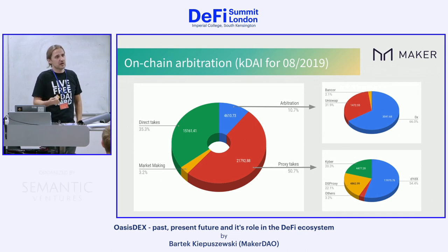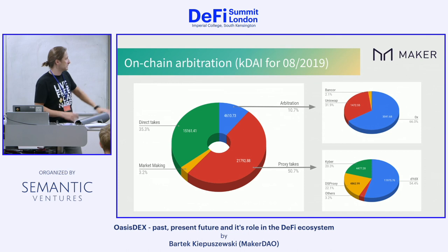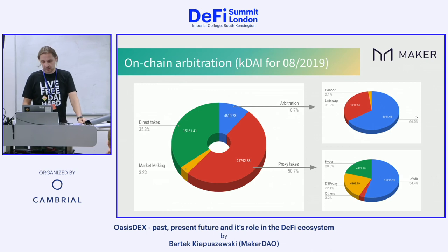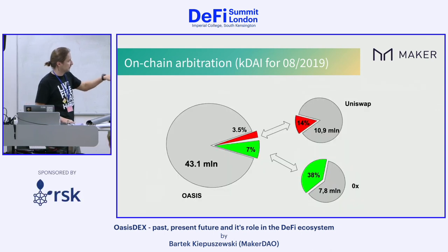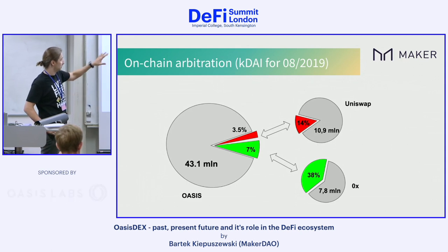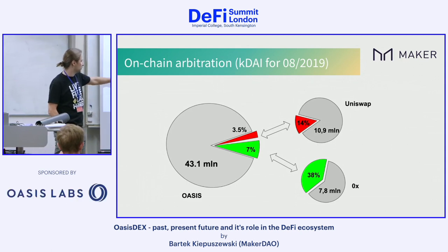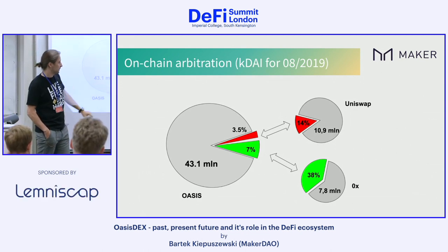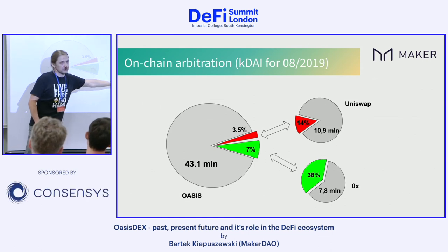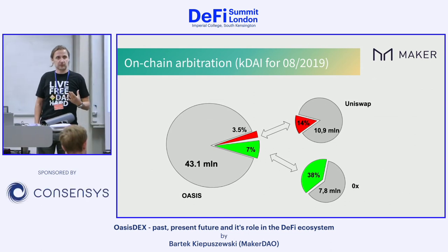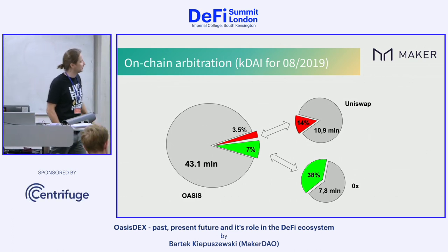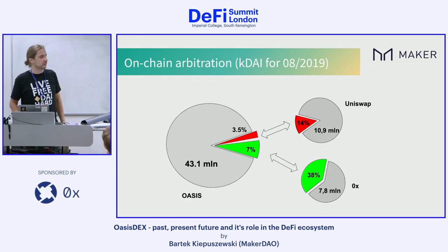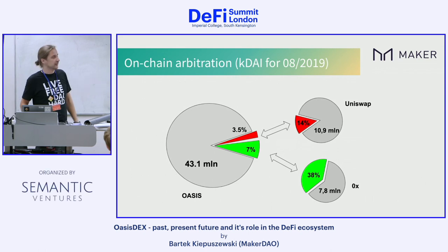For that very month, the total volume was 43 million on Oasis, of which about 10% is arbitrage. For 0x, for example, more than a third of the volume is arbitrage between them and us. For Uniswap it's about 15%. And again, we're looking at ETH/DAI only — this is just one trading pair. So I would say fully on-chain protocols — OasisDEX, Uniswap, Bancor, Kyber — you can do both reads and writes on-chain. Then you have hybrid protocols where you can do reads off-chain but writes on-chain, such as EtherDelta and 0x open order book relayers.